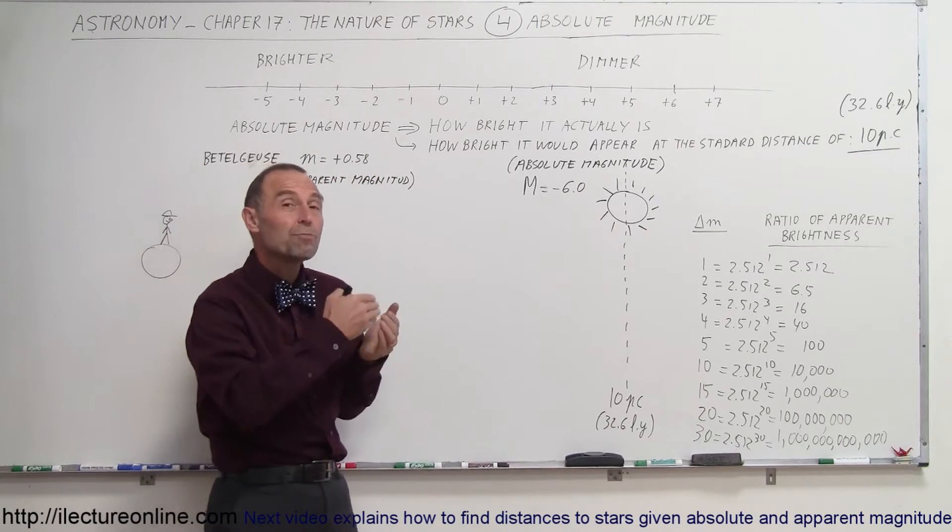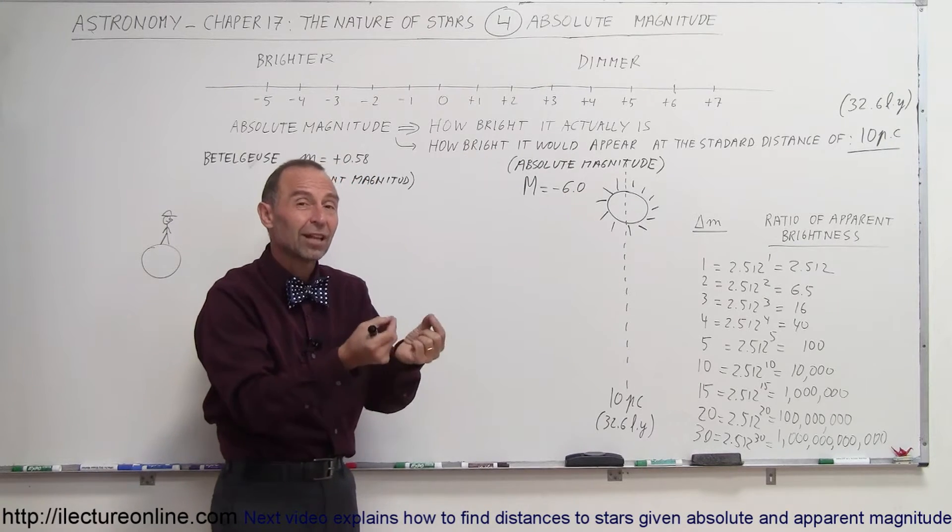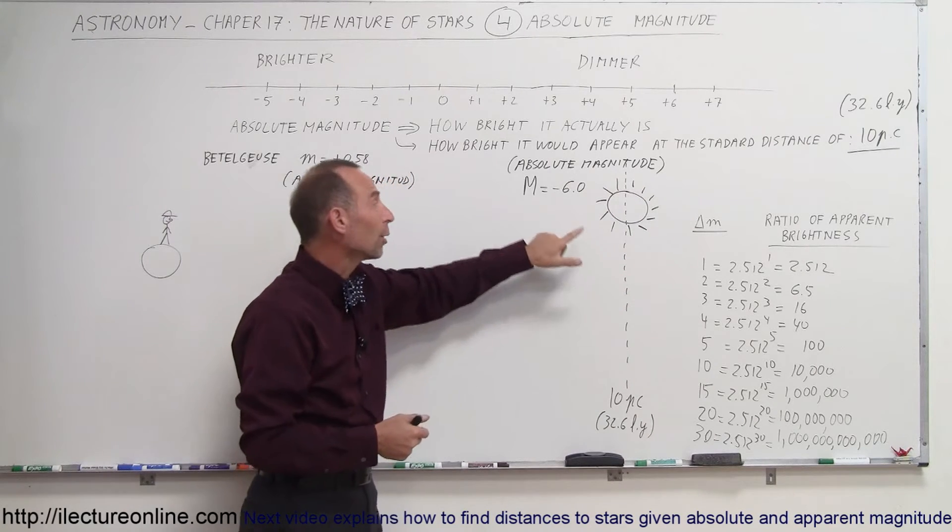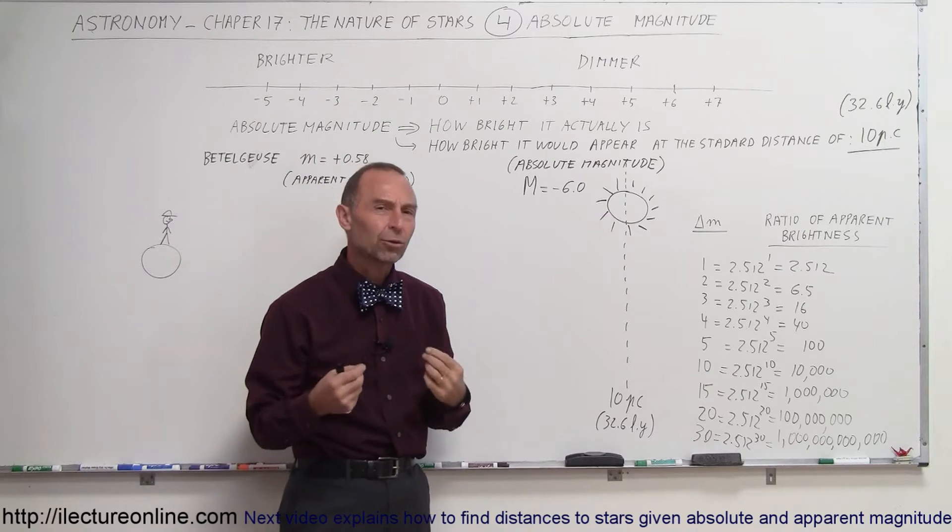Answer is, Betelgeuse must be much farther away than 10 parsecs or 32.6 light years, because it appears a lot dimmer to us at the distance where it's at than what it would be if it was 10 parsecs away. Now, how does that compare to our sun?